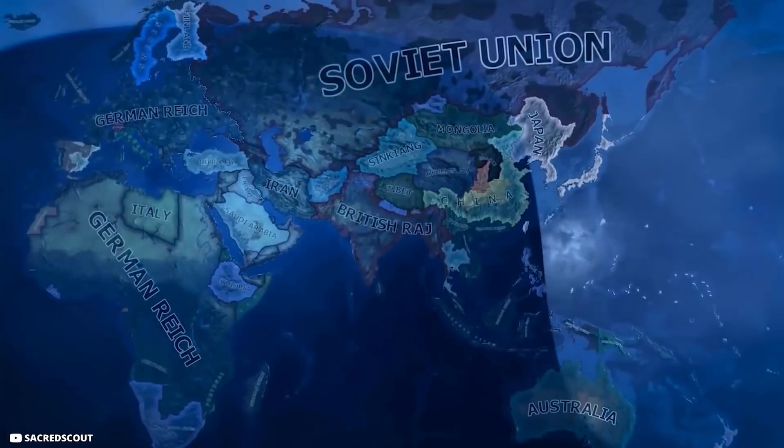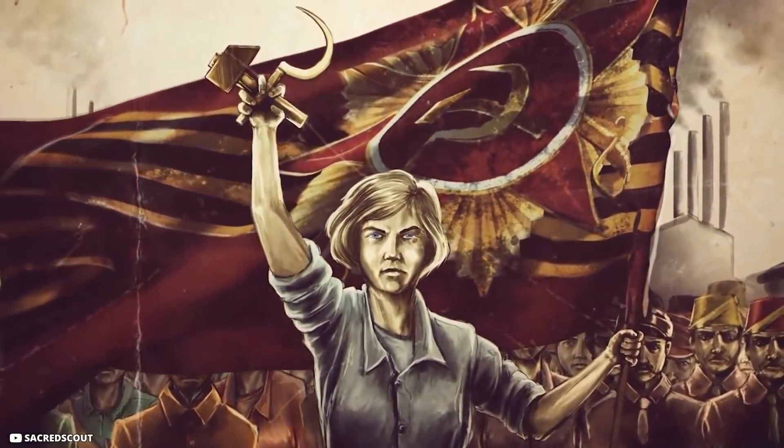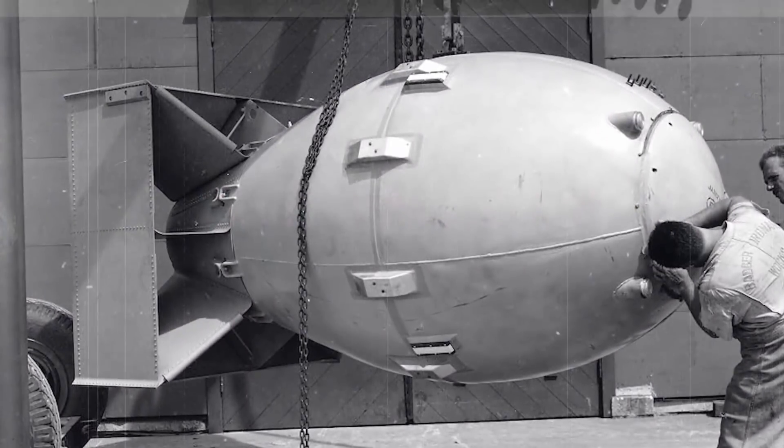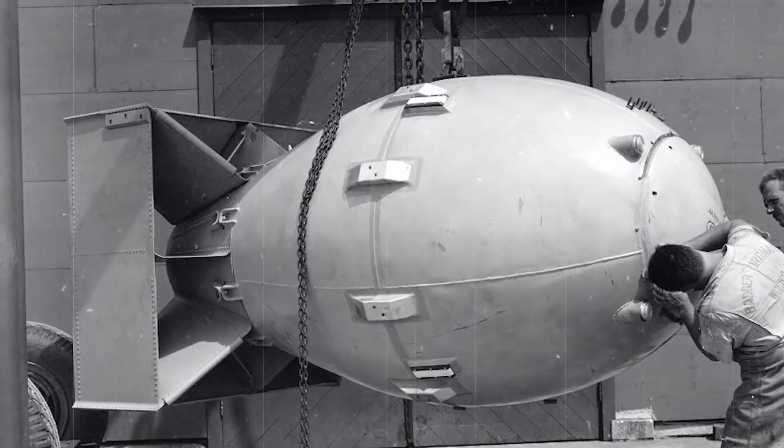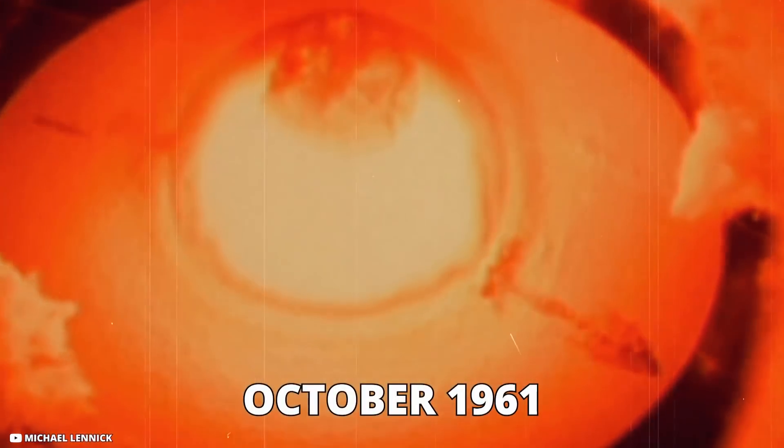Tsar Bomba. The Soviet Union exploded a nuclear device at one of the most tense periods of the Cold War. Kuzma's mother, which means we will show you, is the name of a nuclear weapon. The bomb was also known as Tsar Bomba, or Emperor of Bombs, and it was the most powerful nuclear explosive ever exploded on the world when it went off on October 30, 1961.